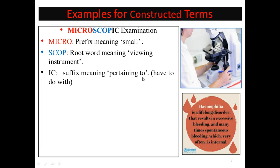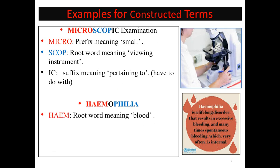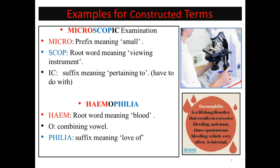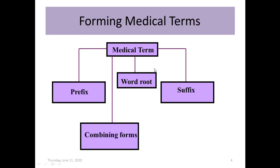Another example: 'hemophilia.' 'Heme' is a root word meaning blood, 'o' is a combining vowel, and '-philia' is a suffix meaning love of. Hemophilia is a lifelong disorder resulting in excessive bleeding, sometimes internal and spontaneous. When forming medical terms we have: a prefix at the beginning, combining forms or vowels, the word root as the foundation, and a suffix at the end.